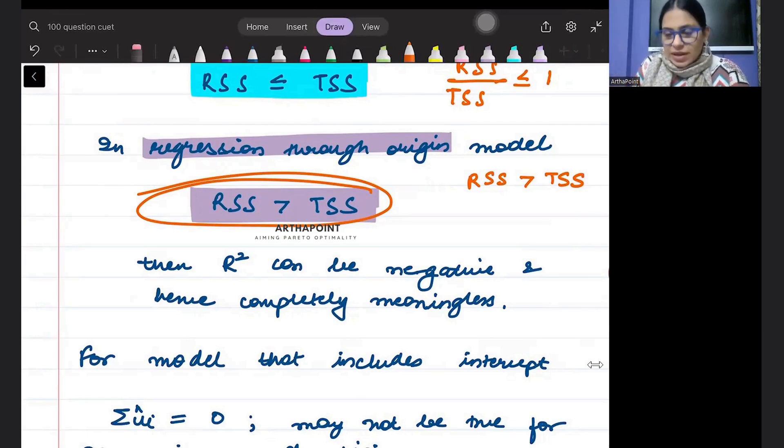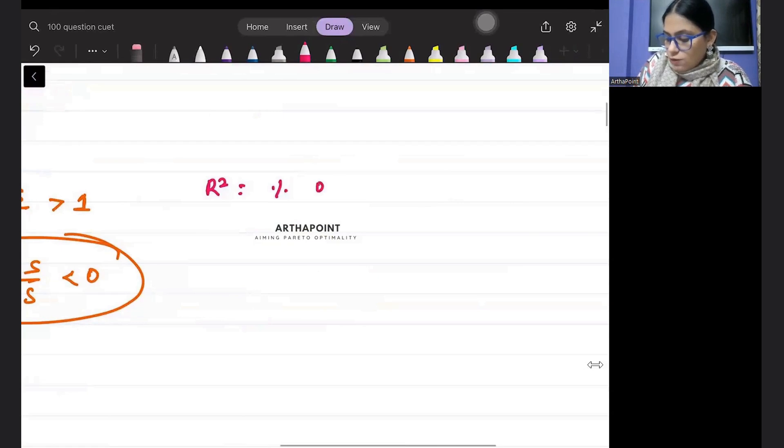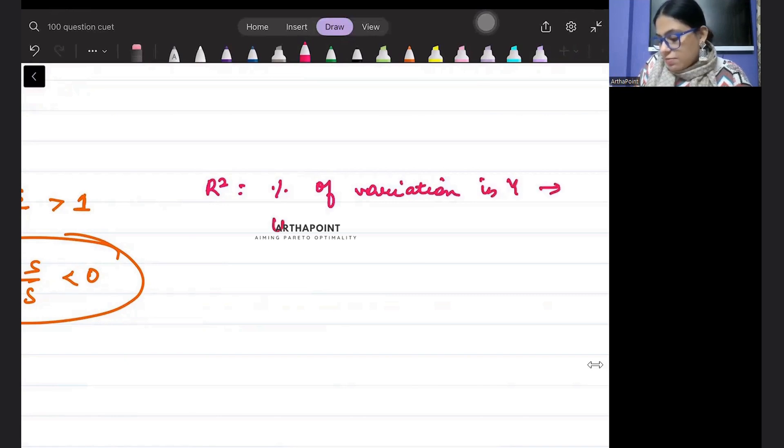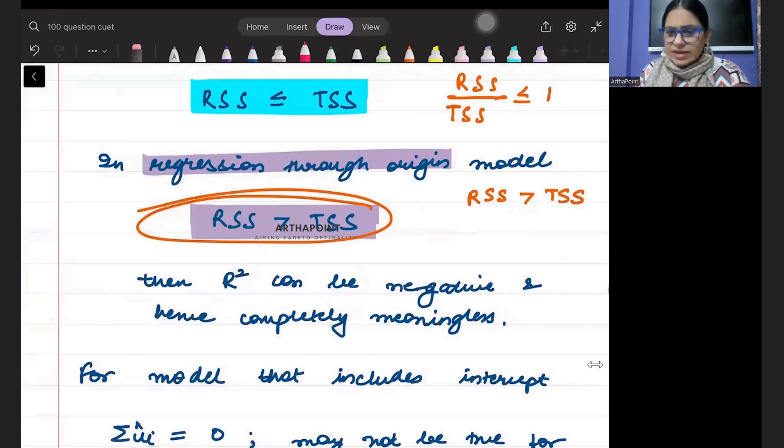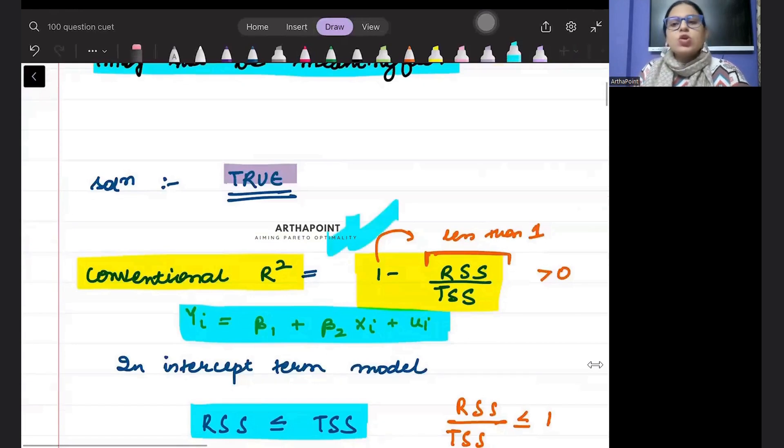Only when R-square is positive, it has a meaning. What does R-square tell? R-square tells us the percentage of variation in y that can be explained due to variation in x. But if this is negative, it has no meaning attached to it. So for the models which are through the origin, this formula is making no sense at all.